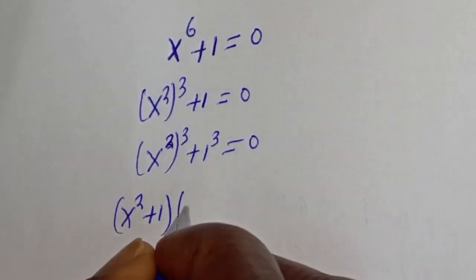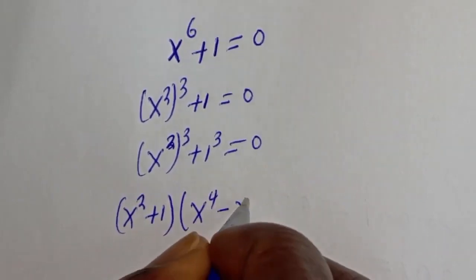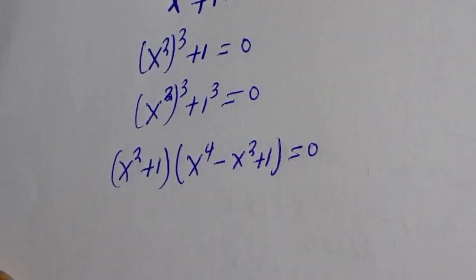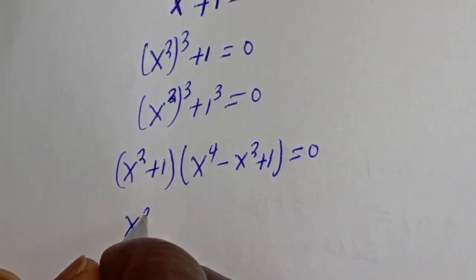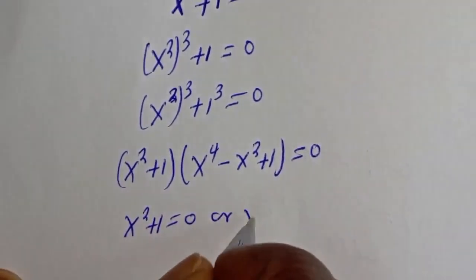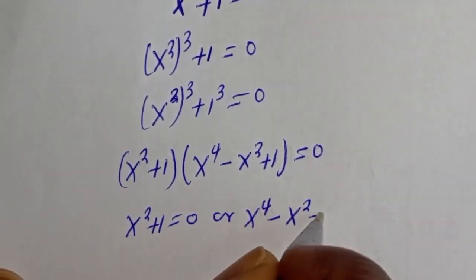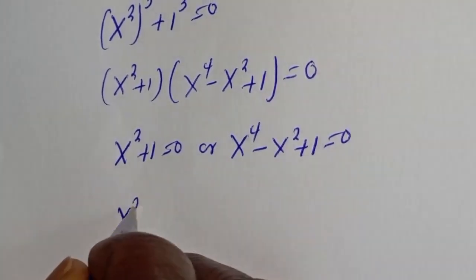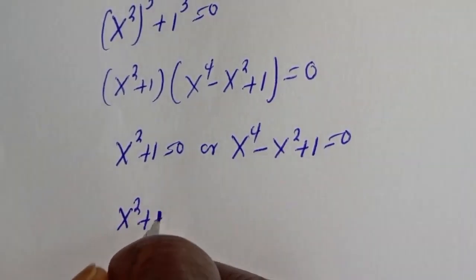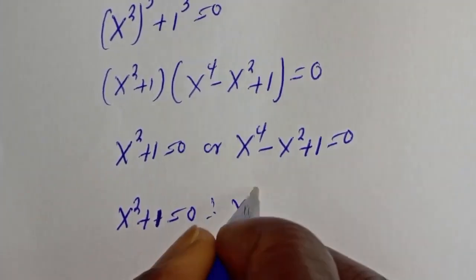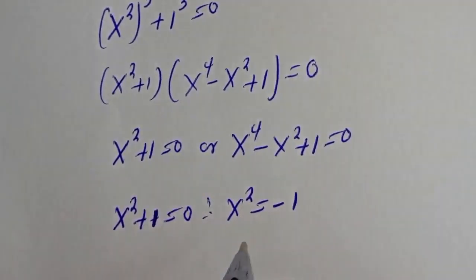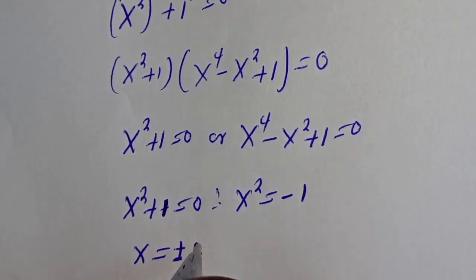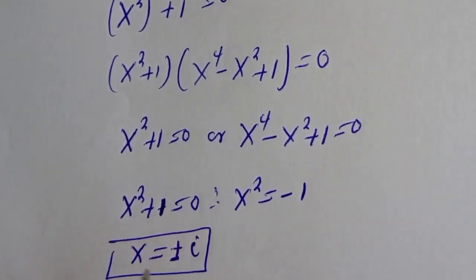s raised to power 6 plus 1 can be factored as bracket s squared plus 1, bracket, s raised to power 4 minus s squared plus 1, is equal to 0. There are two cases here: s squared plus 1 is equal to 0, or s raised to power 4 minus s squared plus 1 is equal to 0. From the first, s squared equals minus 1, therefore s is equal to plus or minus i.